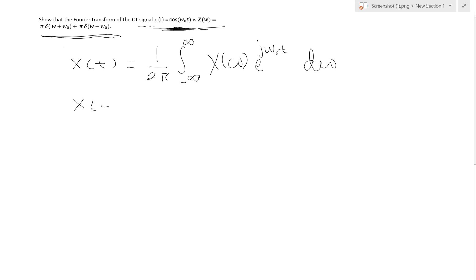So x(t) = 1/(2π) ∫_{-∞}^{∞}, we just write down now the function in terms of X(ω) which in this case we have π δ(ω + ω₀) + π δ(ω - ω₀), all of that multiplied by e^{jωt} dω.